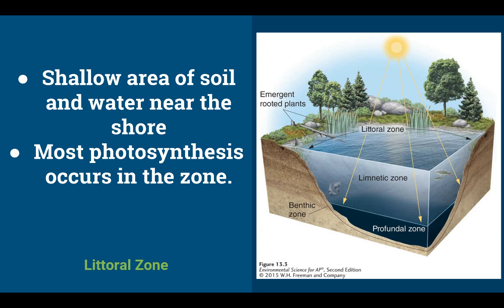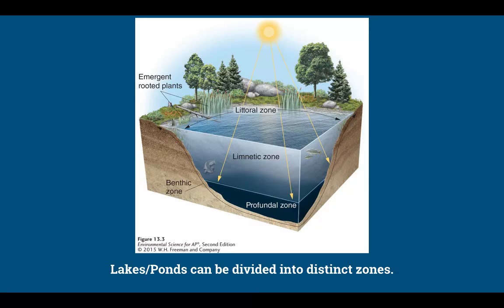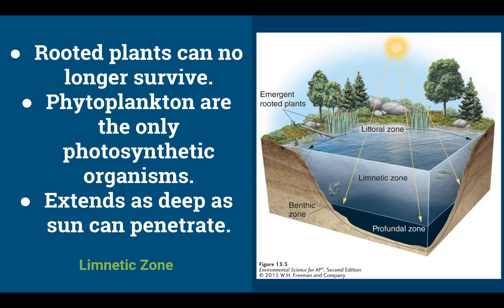The littoral zone is a shallow area near the shore where a lot of photosynthesis occurs because rooted plants like cattails can grow. As we move away from the shore, we enter the limnetic zone, where the water is a little deeper and rooted plants can no longer survive. Phytoplankton floating near the surface are the only photosynthetic organisms in the limnetic zone.